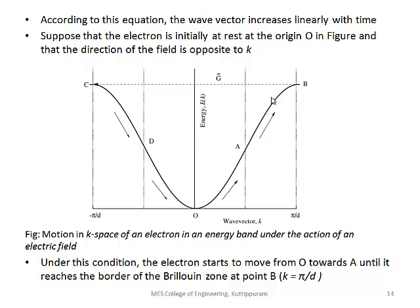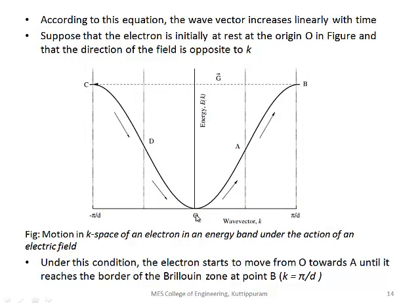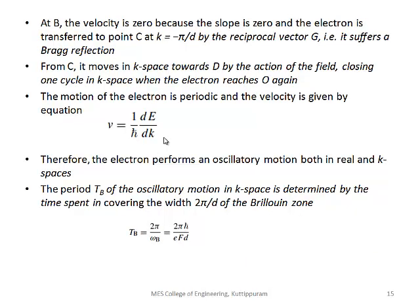When applying a field opposite to the wave vector, the electron moves from O to A, then to B at the edge of the Brillouin zone. At B, the slope is zero, so the electron gets reflected back to C through Bloch reflection. From C it moves to D, then returns to O, completing the periodic cycle.